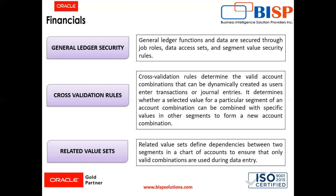Then comes the cross validation rules. Cross validation rules determine valid account combinations that can be dynamically created as users enter transactions or general entries. It determines whether a selected value for a particular segment of an account combination can be combined with specific values in other segments to form a new account combination. For example, if your organization has determined that the company named Operations cannot use the call center Marketing, you can define a cross validation rule such that if a company is Operations, then validate that the call center is not Marketing. New account combinations have to satisfy all the cross validation rules enabled for a chart of accounts before they can be created.